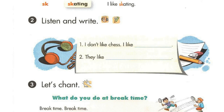Page 68, Lesson 3, Activity 2. Listen and write. 1. I don't like chess. I like blind man's bluff. 2. They like skating.